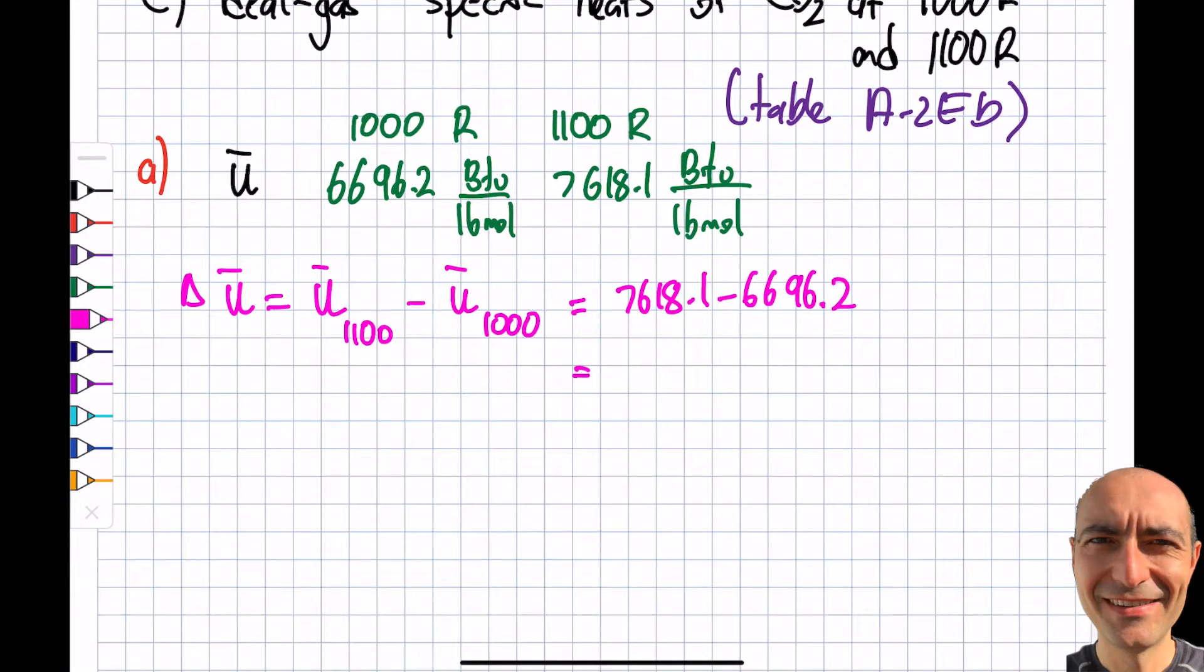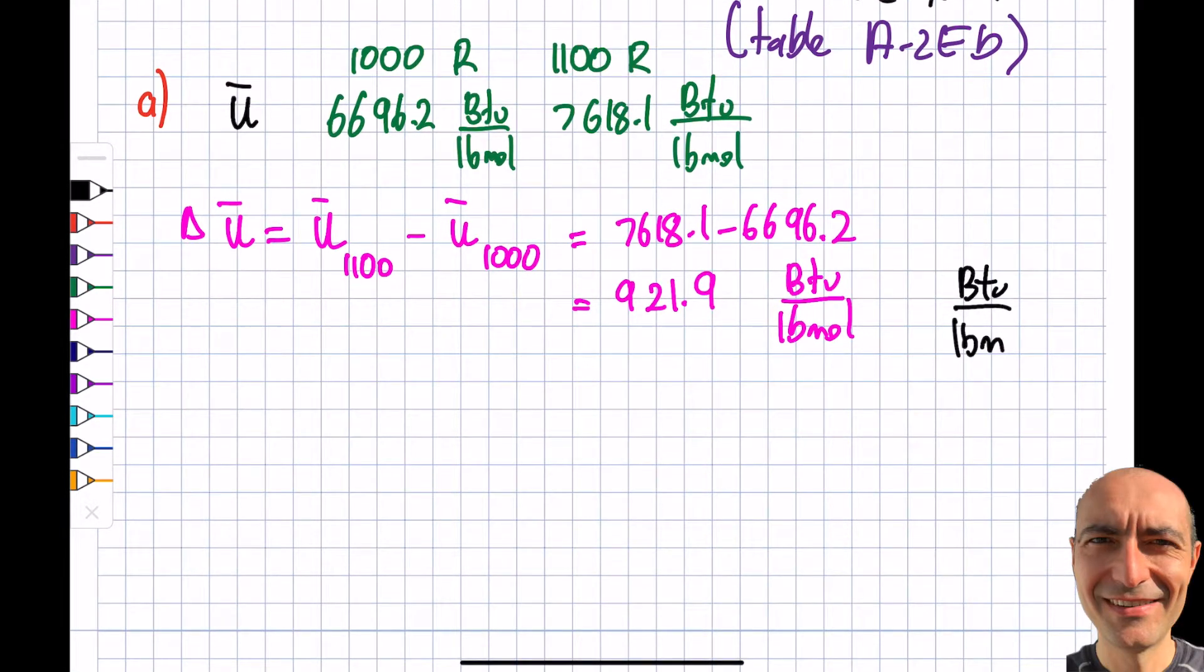I'm gonna get myself 921.9 BTU per pound mole. That's fine. This is actually your answer. But the problem, as you will see in part B and C, is this is not given as BTU per pound mole; in fact, it is given as BTU per pound mass.